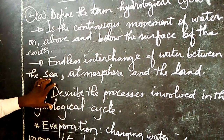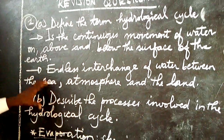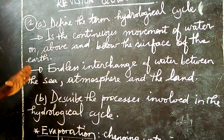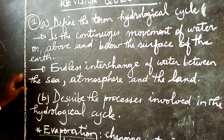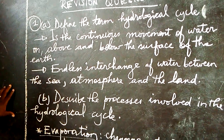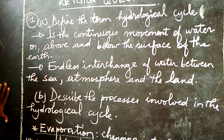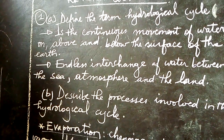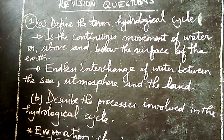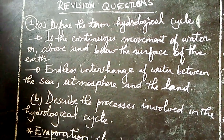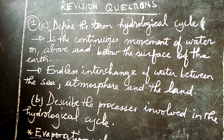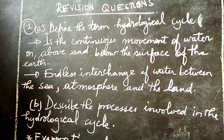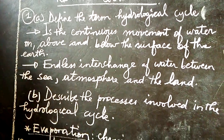Whether it is an ocean or any other kind of water body, so when we talk about the hydrological cycle — as mentioned in the two definitions above — it is a continuous movement of water on, above, and below the surface of the earth. This cycle combines three parts: the water, the atmosphere, and the surface of the earth.